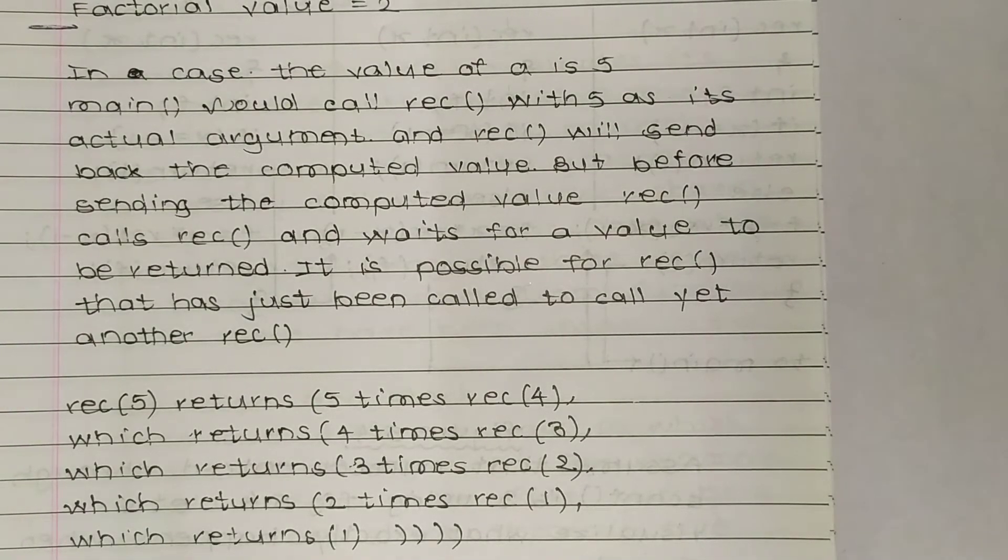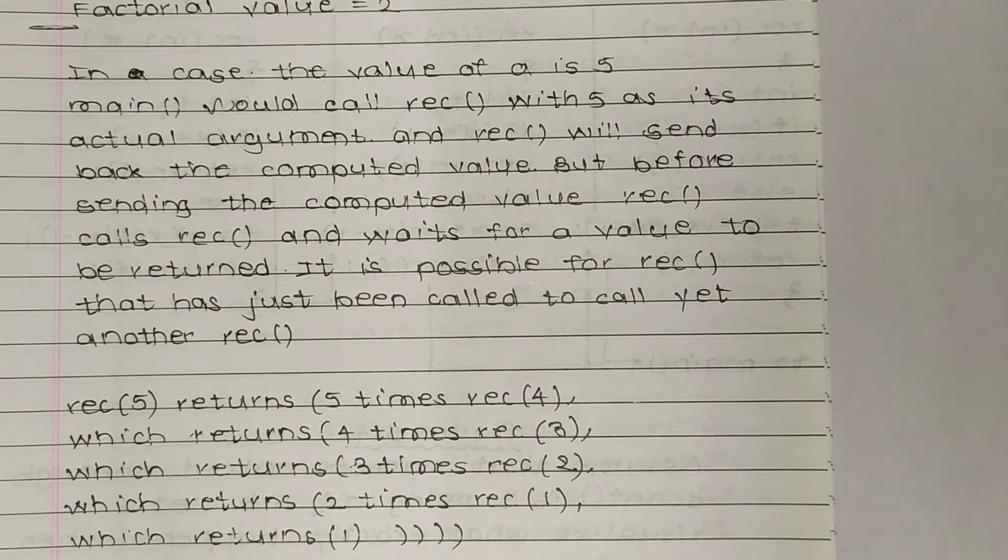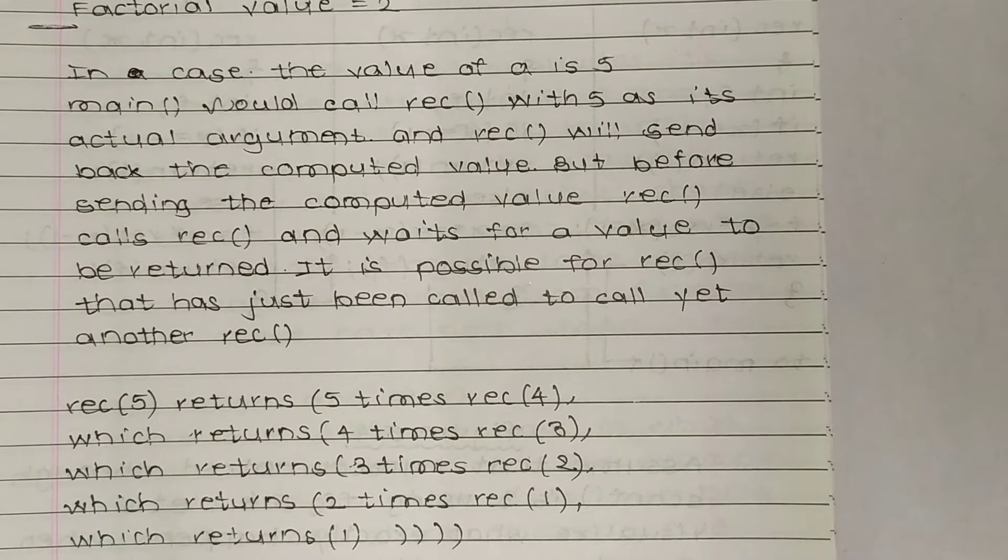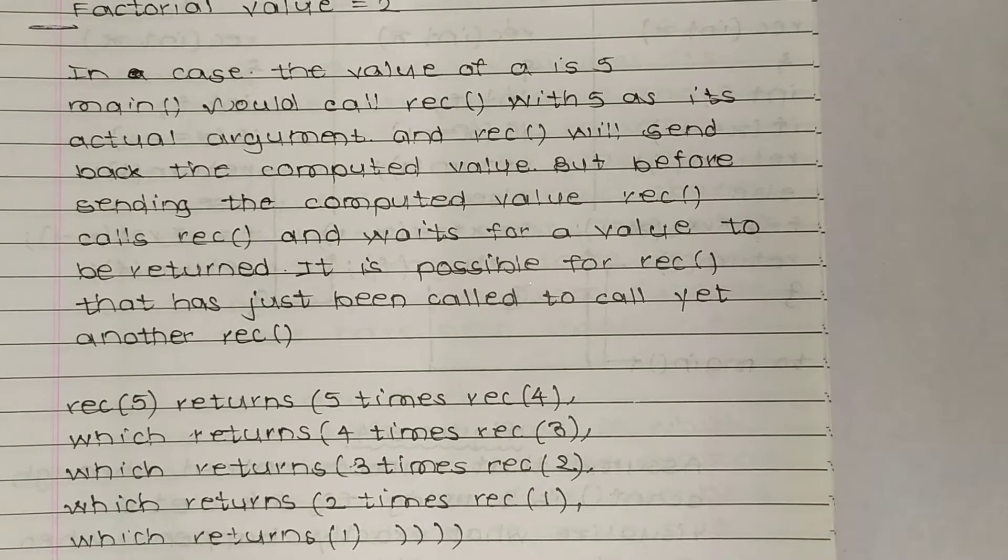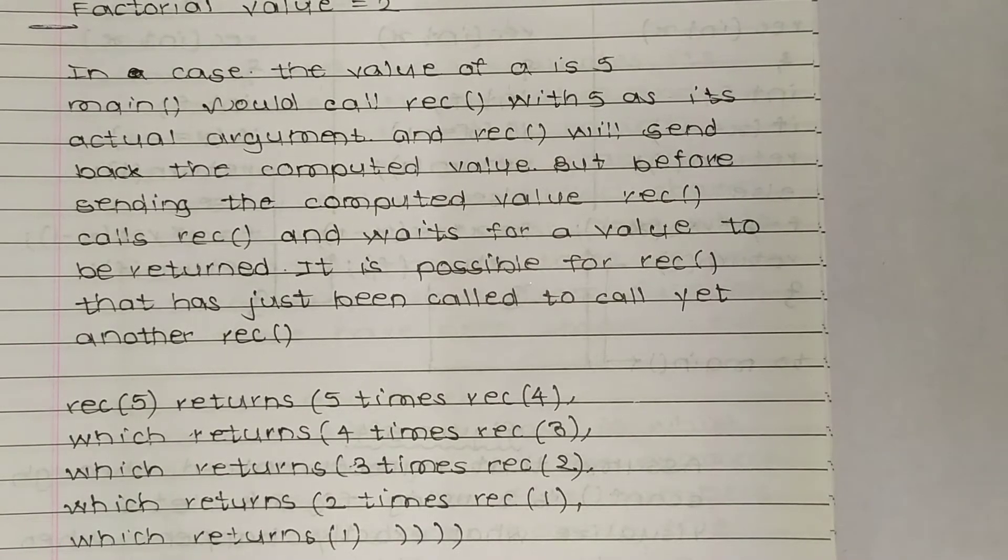We have seen the recursive version of the factorial program. Here we will explain how this program is working. If the value of a is 5, main would call rec with 5. If we are taking 5's factorial, then the value of a will be 5. Main would call rec with 5 as its actual argument, and rec will send back the computed value.